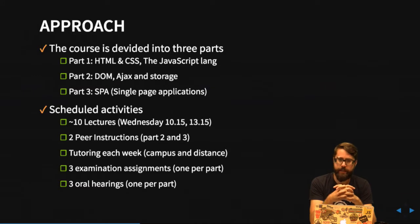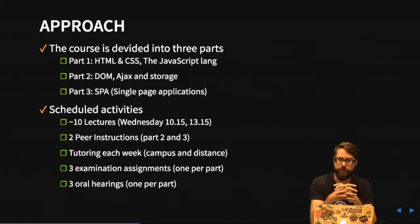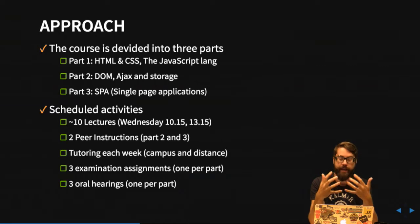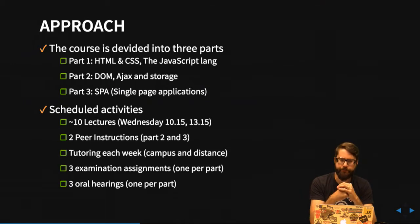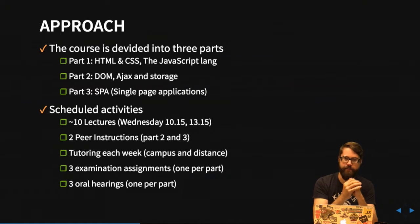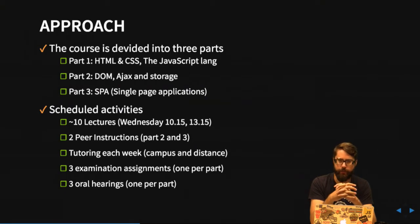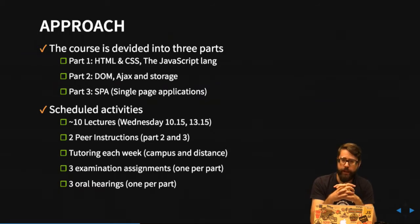Part two covers the DOM, AJAX, and storage. The DOM is the browser's API for modifying and working with a web page — adding, removing, and altering content. AJAX provides asynchronous communication with the server. Storage refers to the browser's built-in storage mechanisms for simple or more advanced data. We'll discuss all of those topics in part two.